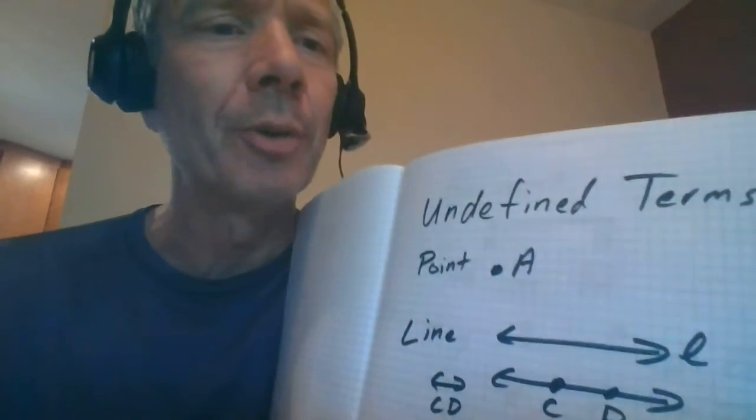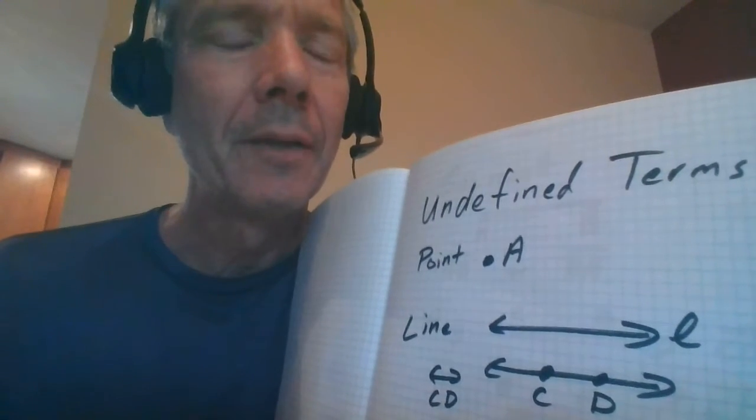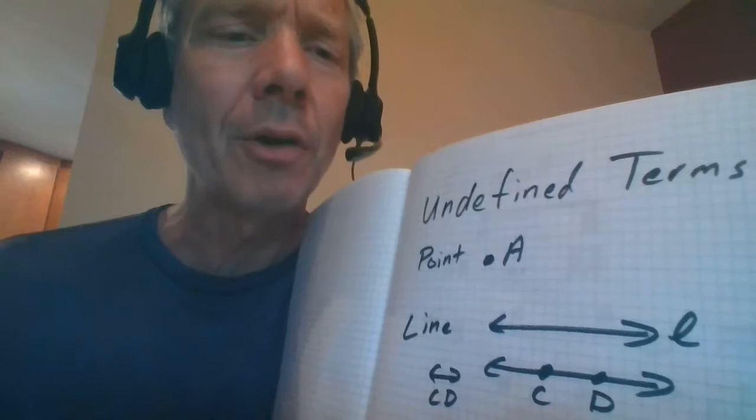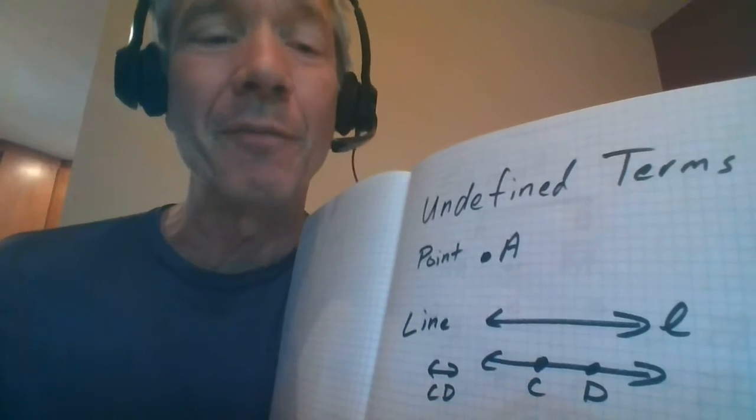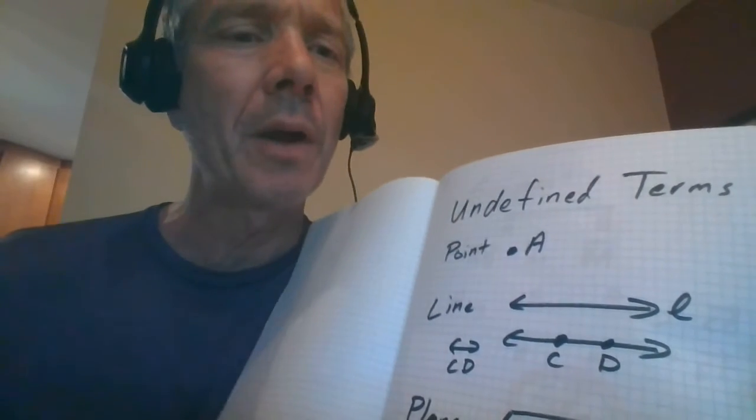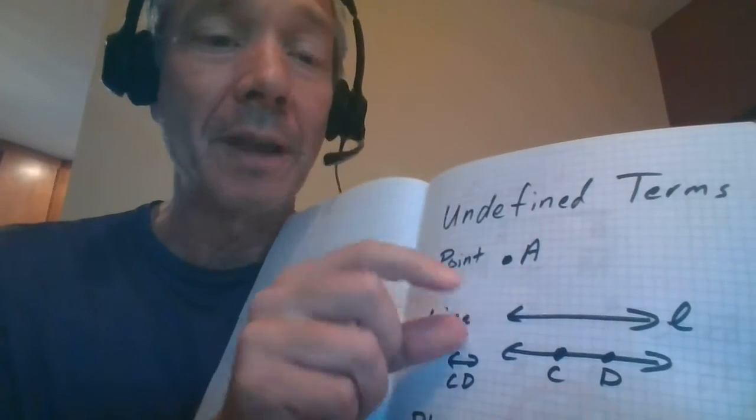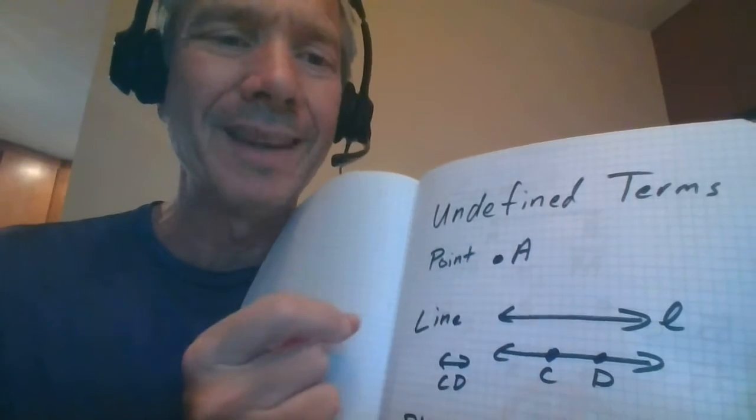So first of all, at the beginning of most geometry books, there's something called undefined terms which always drives me a little crazy because they're clearly defined. I think they're called undefined because everything else is kind of built off them, and they're a little vague in exactly what they are, but we all kind of agree that a point is typically a dot which doesn't have any width or height or anything. It's like infinitesimally small.